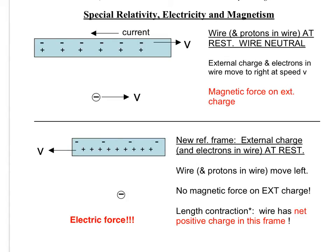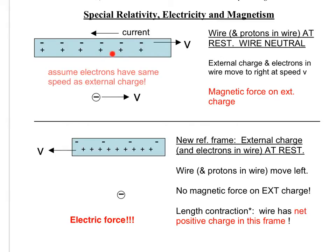In the frame of reference shown in the top figure, we have a stationary wire segment with the current flowing to the left, and we have an external negative charge with velocity to the right. Keep in mind that if the current is flowing to the left, that means the electrons in the wire are flowing to the right, so the speed v here represents the speed of these electrons. Now, the protons in the wire are at rest along with the wire. In this figure, I've greatly exaggerated the thickness of the wire, because I want to show the protons and electrons in the wire separately, for reasons that will become apparent later.